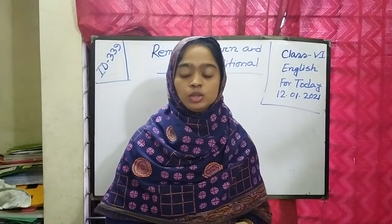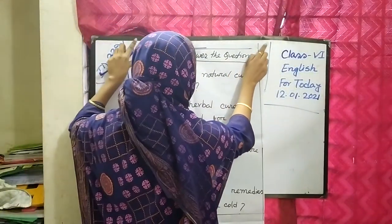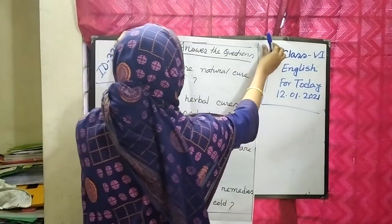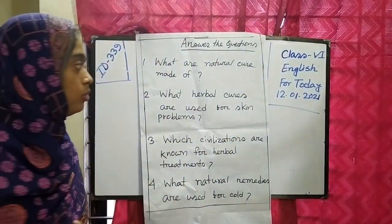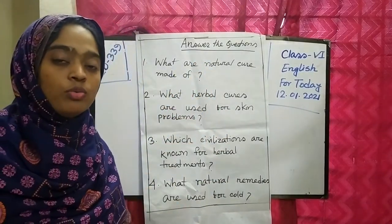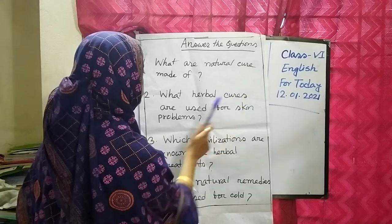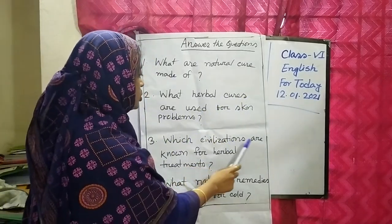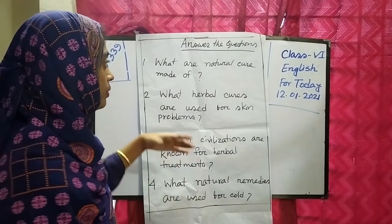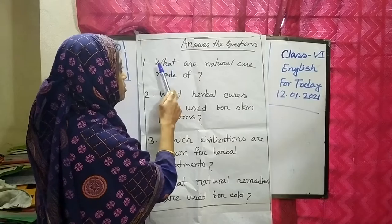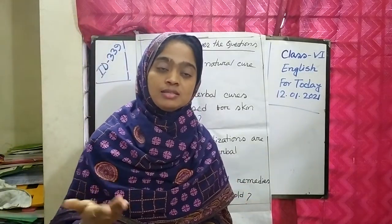Now you can easily answer these questions. Look at all the questions one by one. What are natural cures made of? Natural cures are made of natural herbs, things, and plants. Very good.